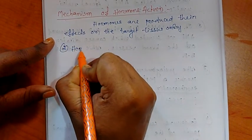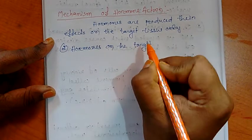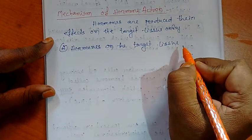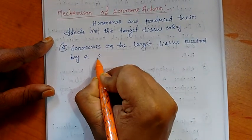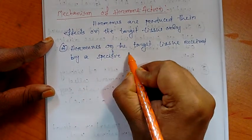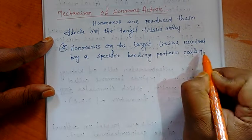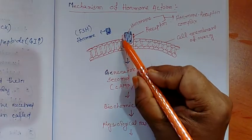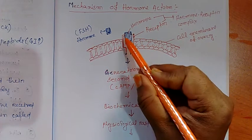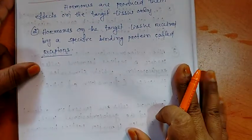Hormones on the target tissue are received by a specific binding protein called receptors. I have shown this in the diagram. Here, this is the receptor which receives the hormones and binds. The hormone forms a hormone receptor complex. That is the receptor.